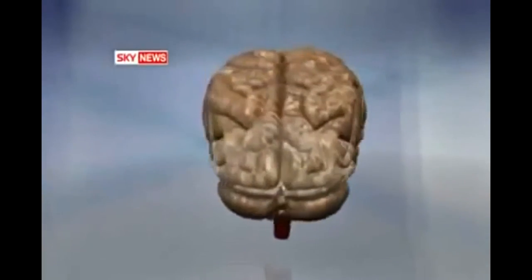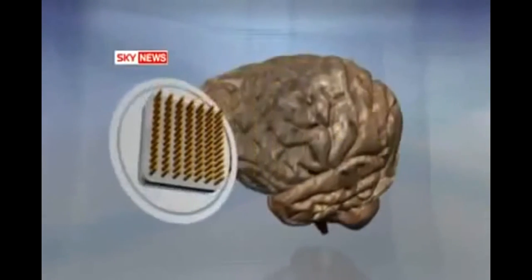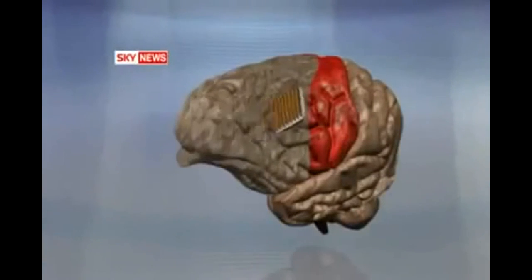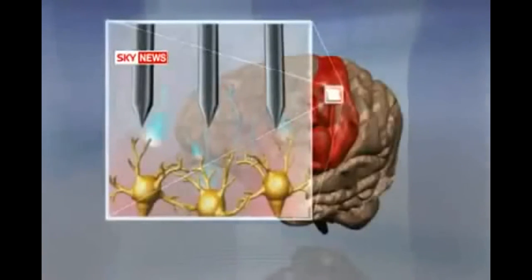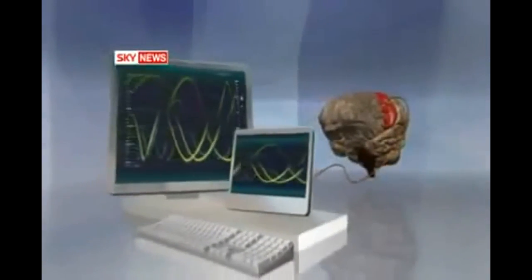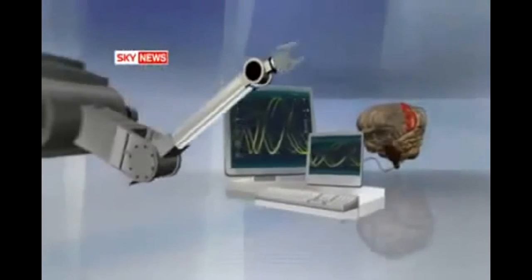The mind control works through a device implanted directly into the motor cortex, the part of the brain that governs voluntary movement. Electrodes pick up pulses within the millions of neurons and send them to a computer which deciphers the pattern and strength of the signals to move the robotic arm.